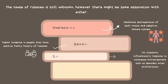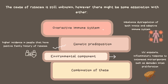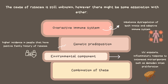The cause of rosacea is still poorly understood. However, there might be an association with: number one, an overactive immune system, which is the imbalance and dysregulation of both the innate and adaptive immune systems. The innate immune system is responsible for protecting against changes in body cells, whereas the adaptive immune system protects against foreign particles.